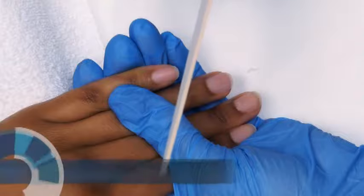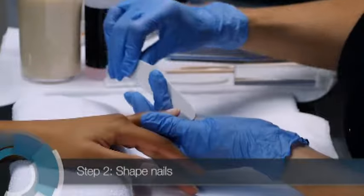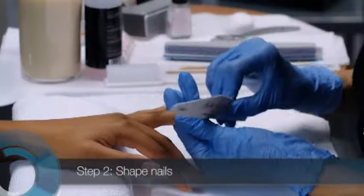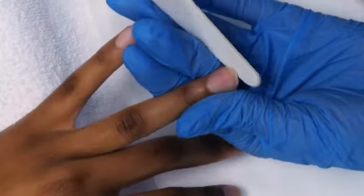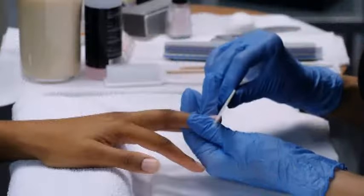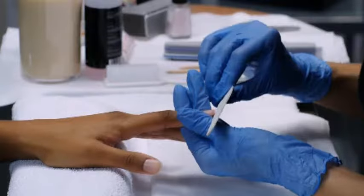Now, use a medium 180 to 240 grit abrasive to shape the nails as you and the client agreed during her consultation. File the left hand from the little finger to the thumb, holding the finger you're working on between your thumb and index finger. File from one side to the center of the free edge, then from the other side to the center of the free edge.